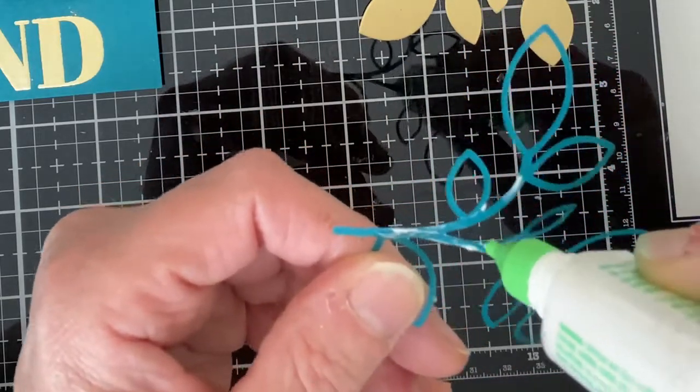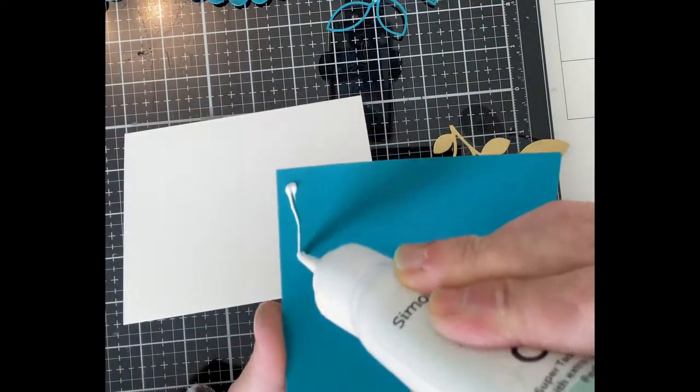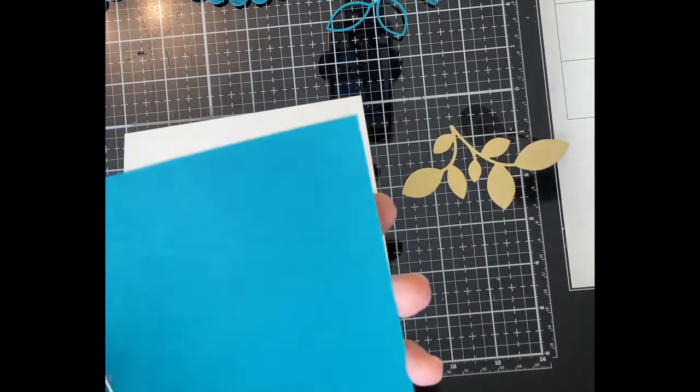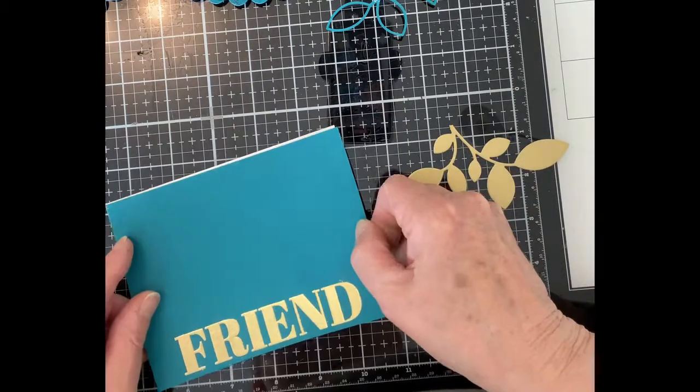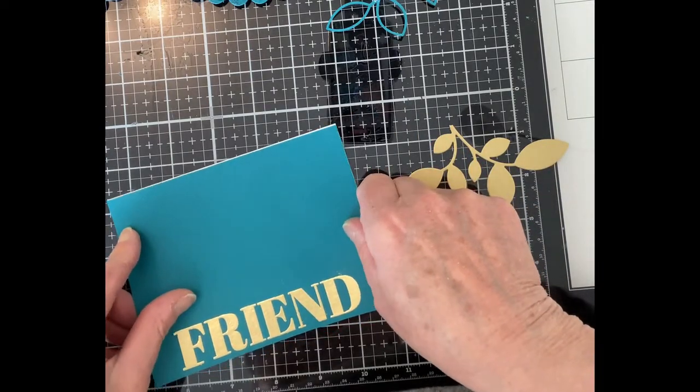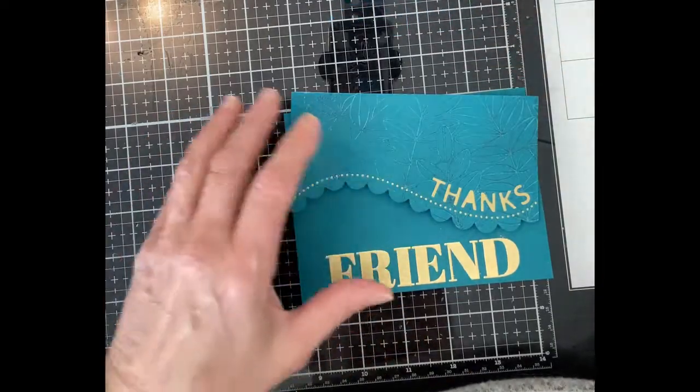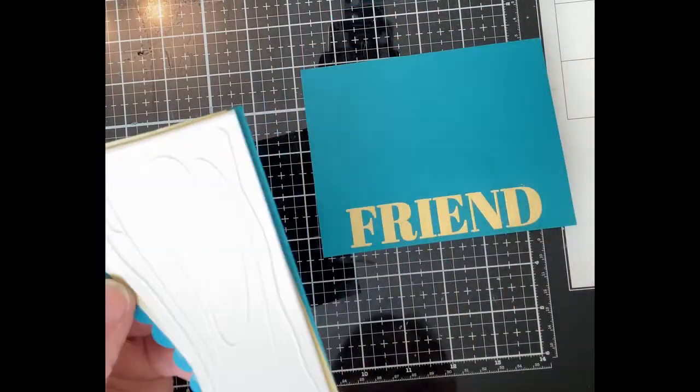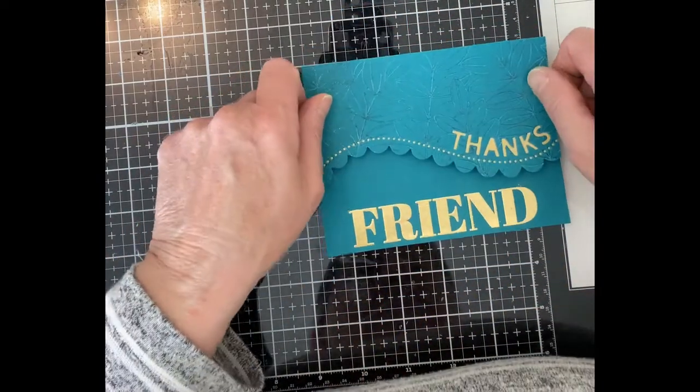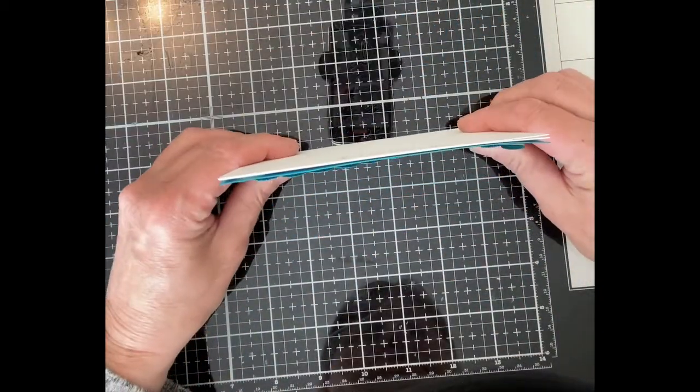The full-size teal panel was attached to an A2 size card base from Neenah Classic Crest 110lb cardstock. After the foam-backed scalloped panel was adhered, the final embellishments were put in place.